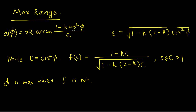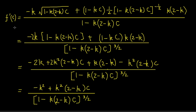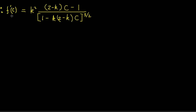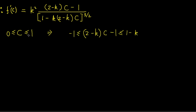We define c = cos²(φ) and call the expression inside the arccos f(c) = (1 − kc) / √(1 − k(2−k)c), where k is treated as a constant and c is between 0 and 1. Differentiating f(c), the sign of f′ is determined by the numerator (2−k)c − 1, since k² and the denominator are always positive. Since c ∈ [0,1], the numerator satisfies −1 ≤ (2−k)c − 1 ≤ 1 − k.